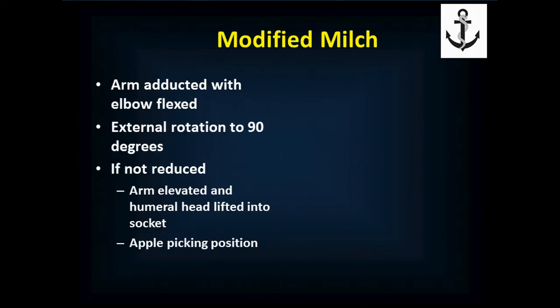In the modified Milch technique, for an inferior dislocation — which is the most common — you adduct the arm to the patient's side, placing their elbow against their side and flexing the elbow to 90 degrees. It's as if their elbow is against their stomach and their hand is out as if to shake hands. You put your hand on the palm of their hand, use your other hand to hold the elbow against their side, and let the weight of your hand slowly rotate their arm out to about 90 degrees. You're not pushing down — just using the weight of your hand to fatigue their muscles and relieve spasm.